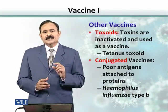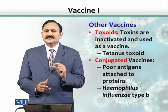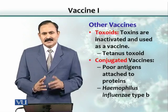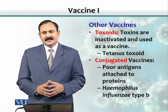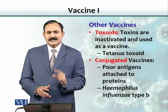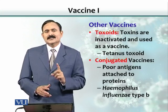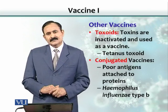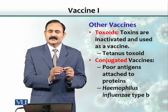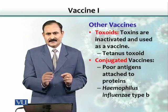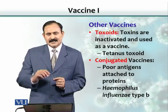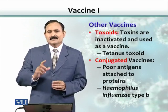Sometimes the molecule of the toxin is very small. For any protein or molecule to be antigenic, it must have a certain molecular weight — if it is smaller than 10,000 daltons, it would be a poor antigen. In such cases, we attach these poor antigens to other proteins called carriers; this process is called conjugation, producing conjugated vaccines. Haemophilus influenzae type B is an example.